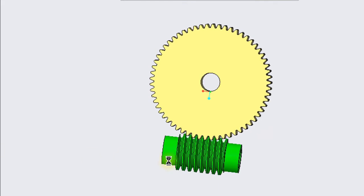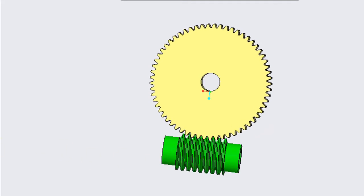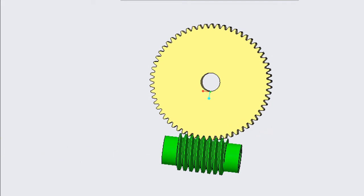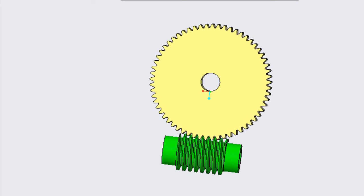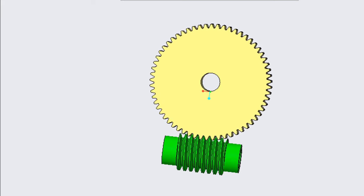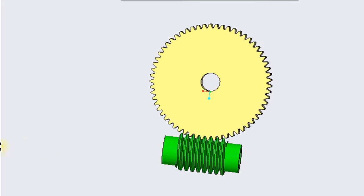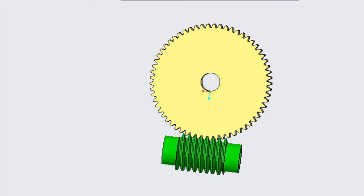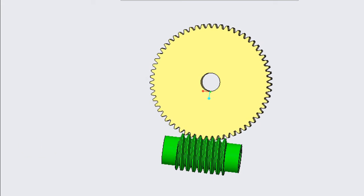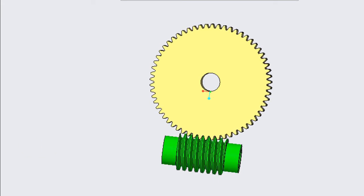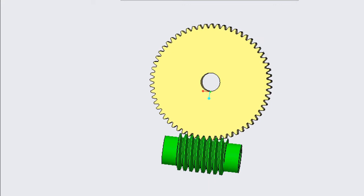Today we will learn how to design this worm and wheel, how to assemble them and connect them with a gearing mechanism and servo motors to have this wonderful animation. We will do all this by using PTC Creo Parametric.